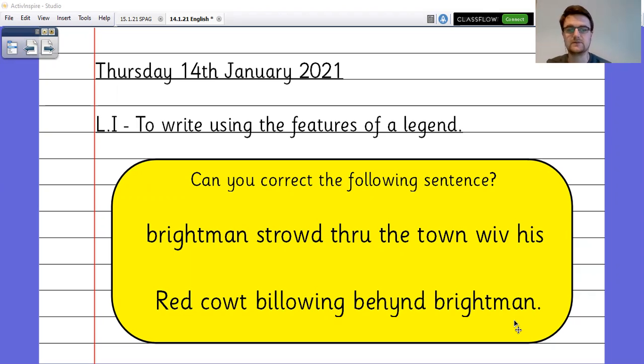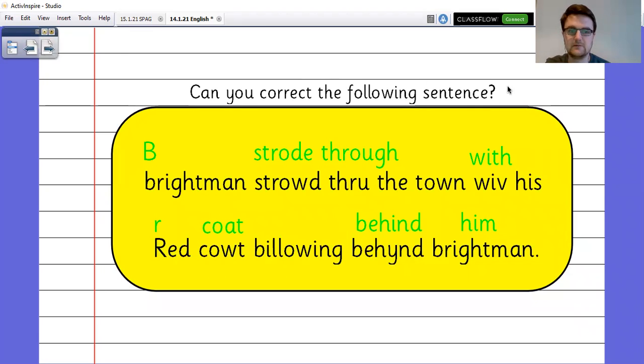So Brightman strode through the town is spelt incorrectly as is through so I've gone through and changed them. With as well red has got a capital R when it doesn't need a capital R. Coat has been spelt incorrectly. Behind has been spelt incorrectly and then because we've already got Brightman up here I've changed the Brightman down here to a pronoun because I think it flows better instead of repeating that name when nobody else has been mentioned there.